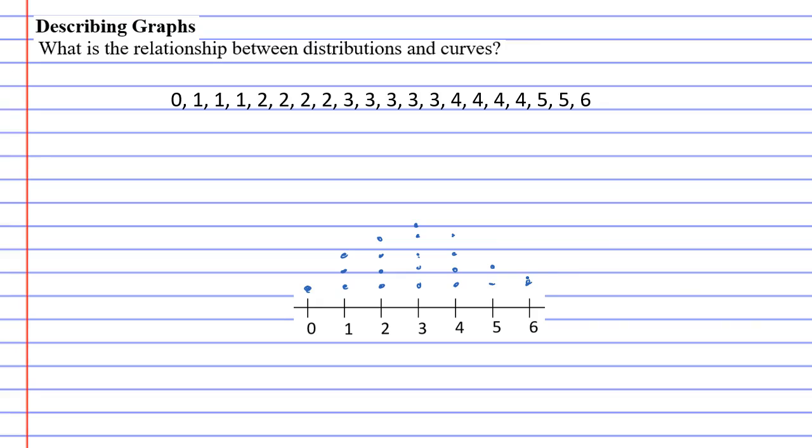So a dot plot is a type of distribution. And it makes it easier to see what the data looks like.